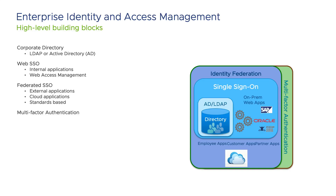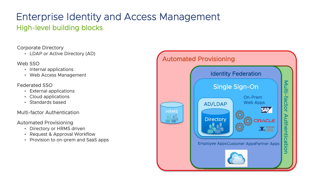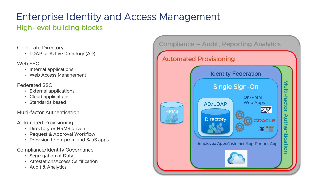Closely tied to SSO and federation is the need for multi-factor authentication, or MFA. With the use of MFA, we can have a higher trust level in who the user is. With the ever-growing catalog of applications, directories, partners, and SaaS applications, we need something that can help with the lifecycle of the users. Many companies have tied their user lifecycle to their human resource management system. And lastly, we need capabilities to monitor and audit our identity and access management solution, to make sure the right person has the right access at the right time and for the right reasons.